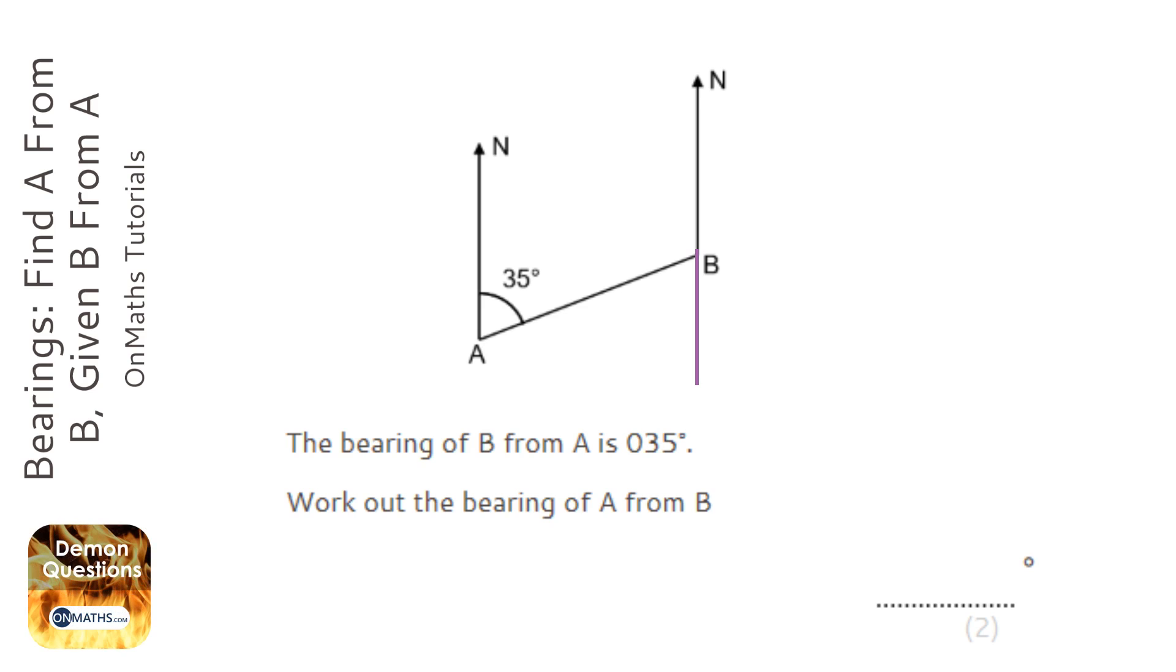So it says the bearing of B from A is 35 degrees. Work out the bearing of A from B. So if it's from B, I'm at B and I'm working at the angle of A.